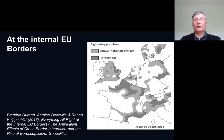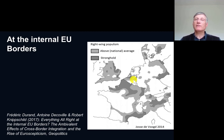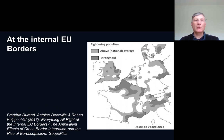Is everything harmonious at internal borders? One can argue that there are a lot of shared identities, but that doesn't necessarily mean that border-crossing identities are the only dominant identities in those areas. As you see on this map, it shows above-average support for populist nationalist parties. Border areas all over Europe spring out as real hotbeds of new forms of nationalism. This is basically argued in the great paper by Frédéric Durand, Antoine Decauville, and Robert Knipschild.